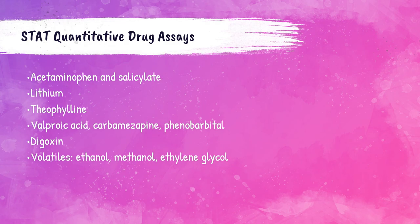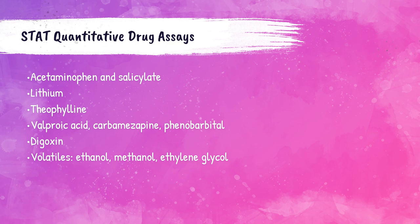The recommended STAT quantitative drug assays give the doctor the exact amount of drug present in the patient's body. These are: acetaminophen and salicylate (Tylenol and aspirin), lithium (for bipolar disorder treatment), theophylline (a bronchodilator), valproic acid, carbamazepine, and phenobarbital (anti-epileptic drugs for seizure prevention), digoxin (a heart medication), and volatile substances — substances that evaporate at room temperature. Examples of volatiles tested in the clinical lab are ethanol, methanol, and ethylene glycol.